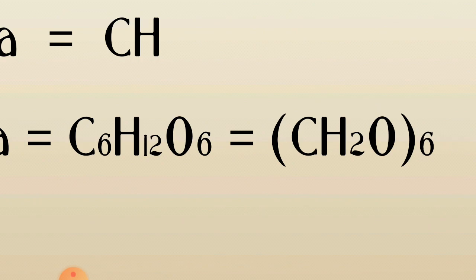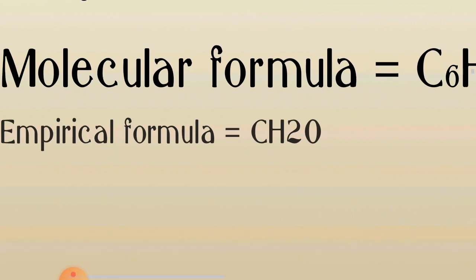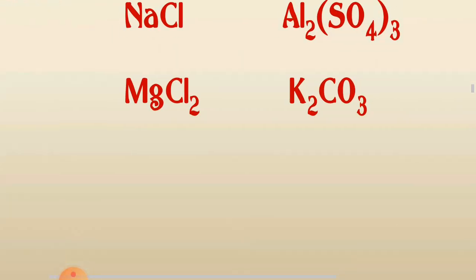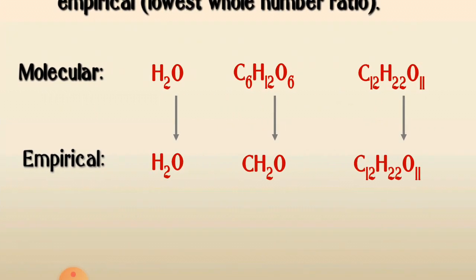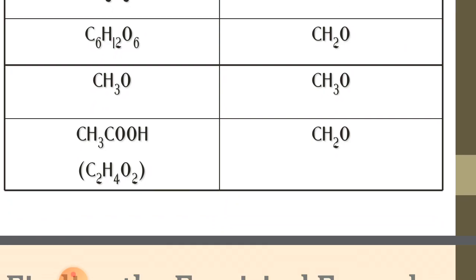So for glucose, the ratio is: 1 carbon, 2 hydrogen, 1 oxygen — giving the empirical formula CH₂O. For water H₂O, the empirical and molecular formula are the same. Sucrose C₁₂H₂₂O₁₁ — you cannot simplify further, so empirical and molecular formula are the same. For hydrogen peroxide H₂O₂, the empirical formula is HO. Acetic acid C₂H₄O₂ has empirical formula CH₂O.